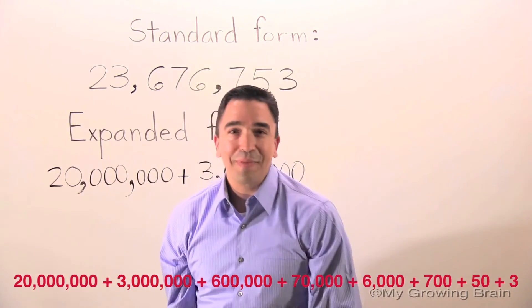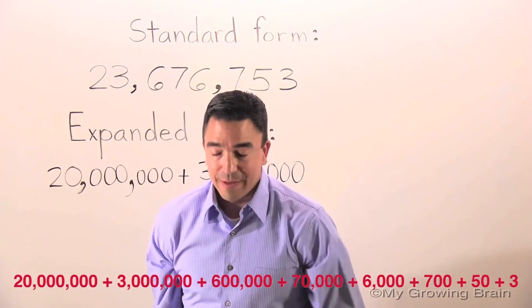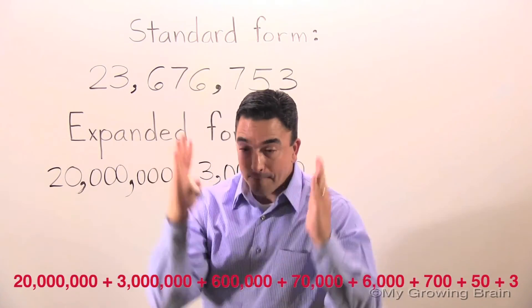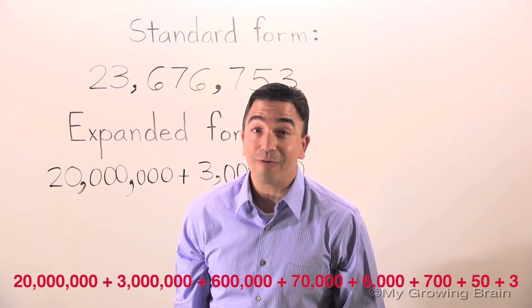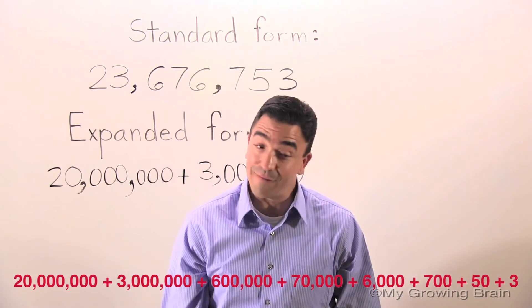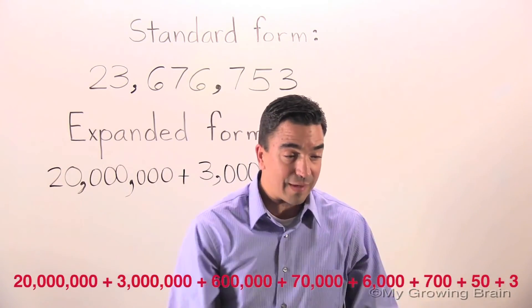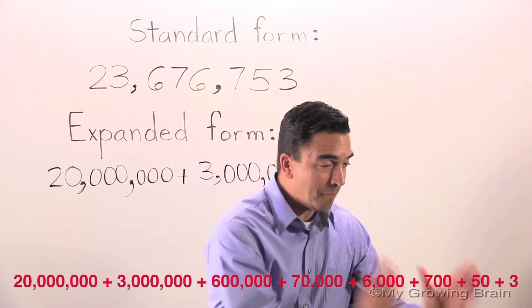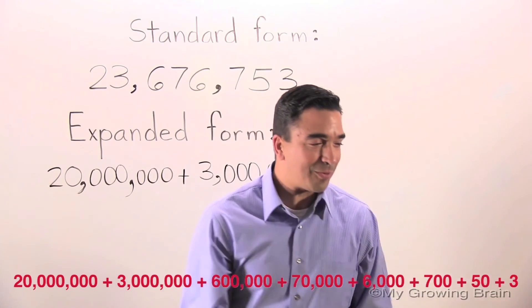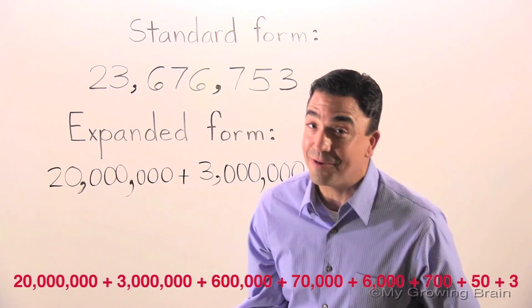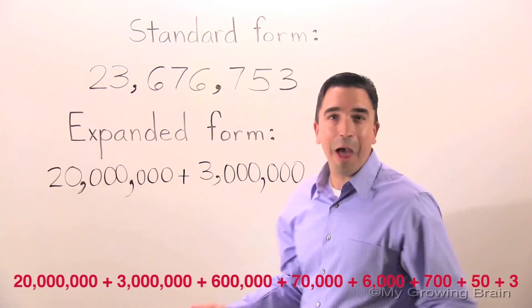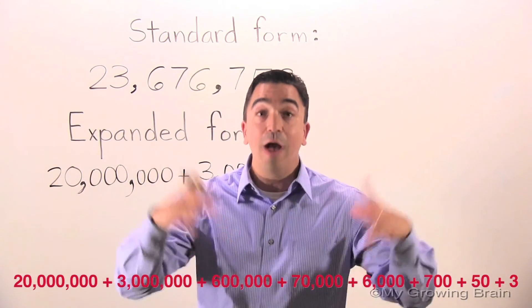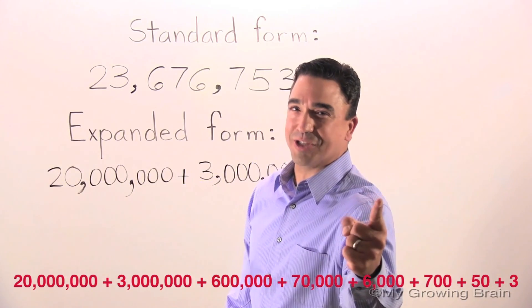20 million plus 3 million plus 600,000 plus 70,000 plus 6,000 plus 700 plus 50 plus 3. And that concludes our lesson on expanded form. Coach Mike at My Growing Brain. Challenge Yourself.